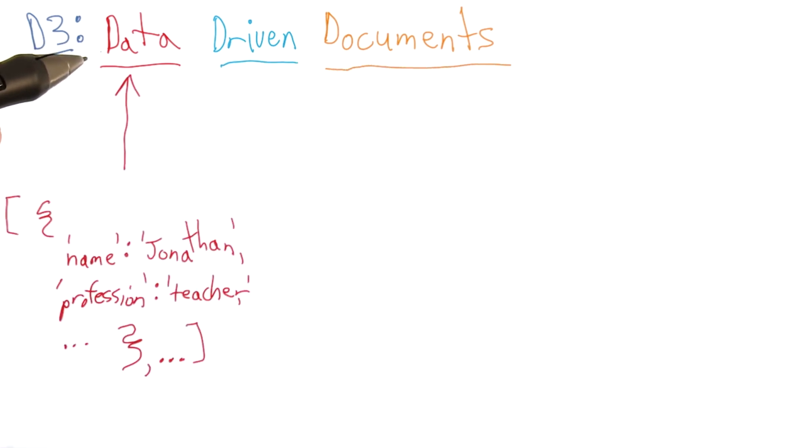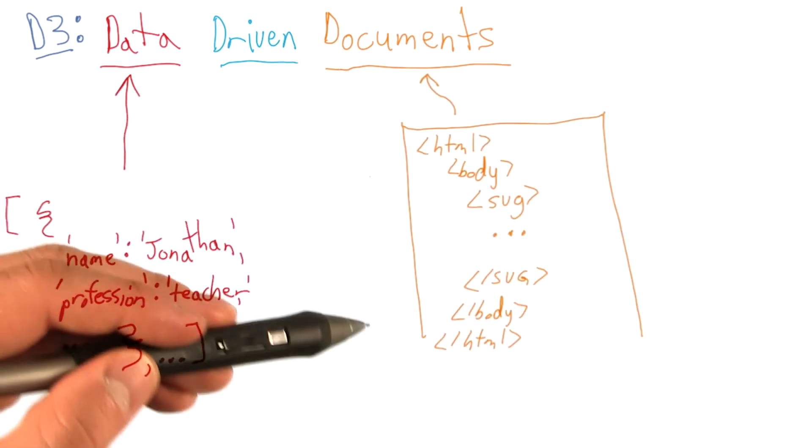Data, in this case, refers to some information we are trying to visualize. Be it CSV or a JSON loaded externally or simply a JavaScript object or variables. Documents is a reference to a web page or web document.